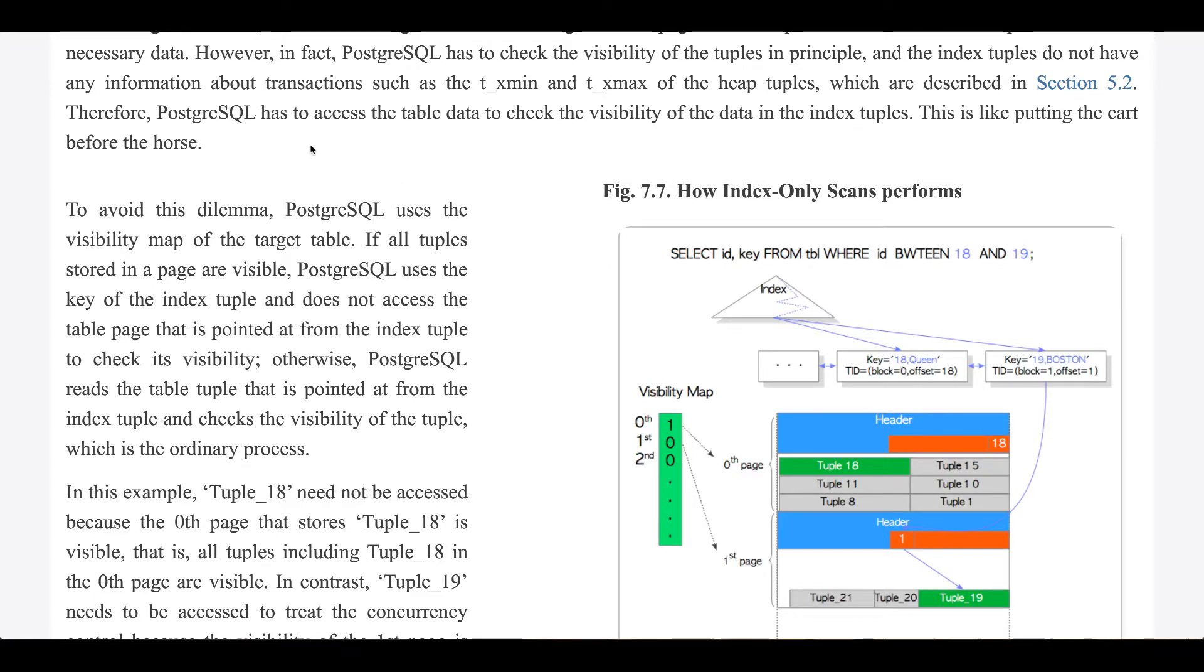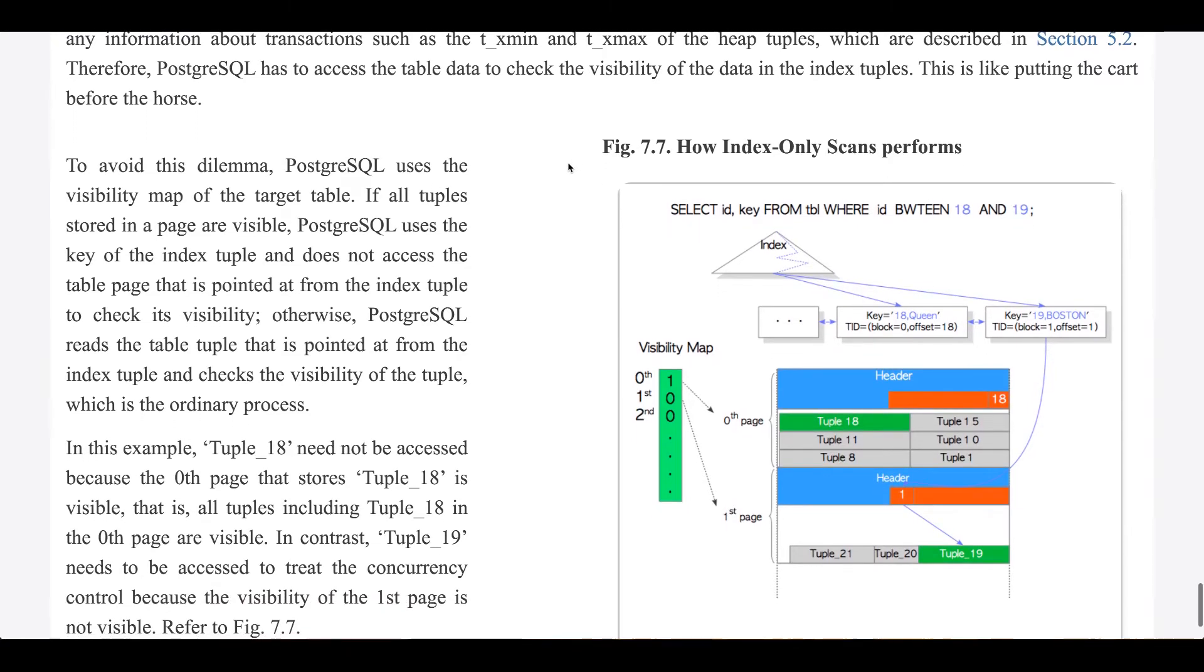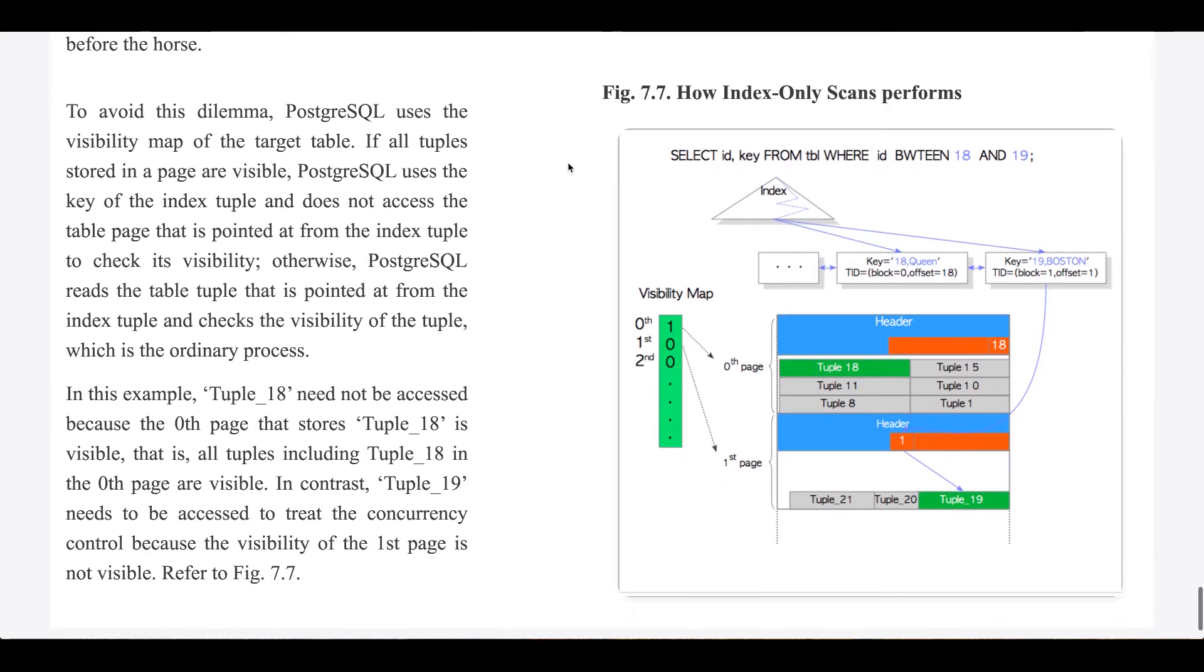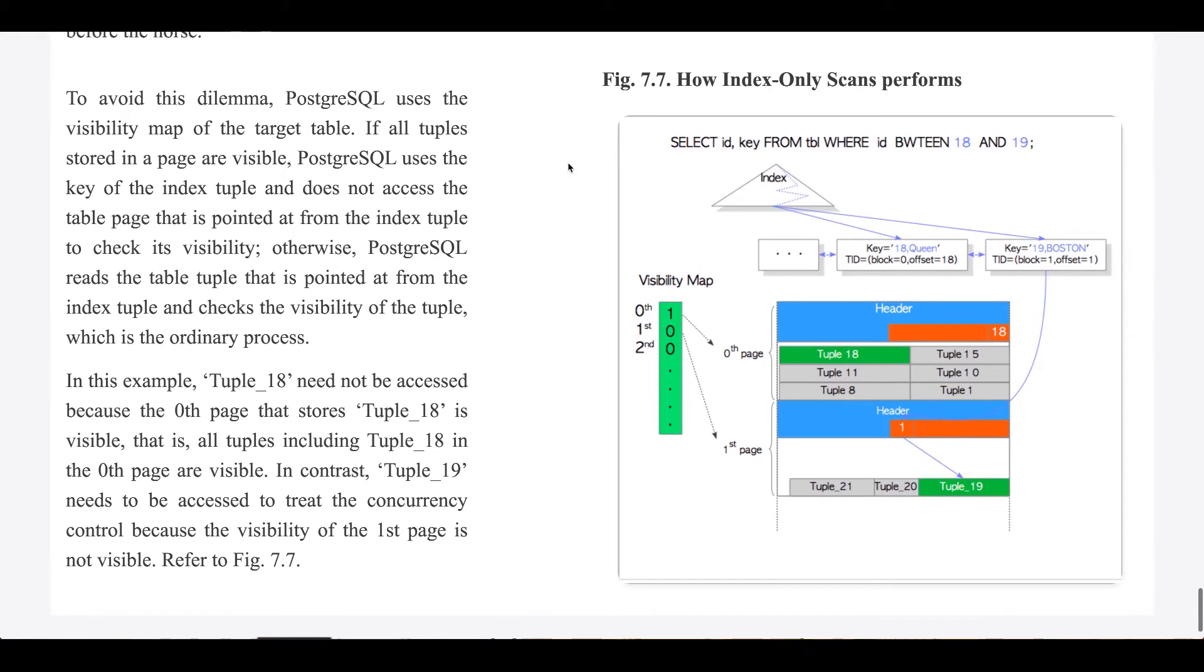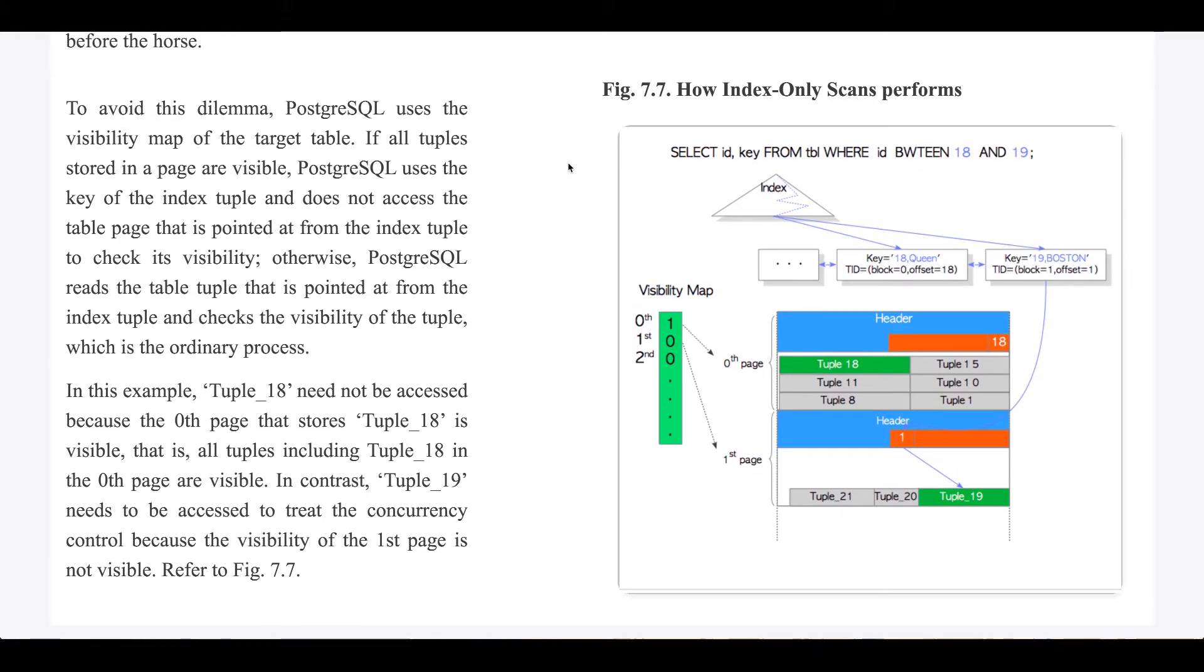Therefore, Postgres has to access the table data to check the visibility of the data in the index tuples. This is like putting the cart before the horse. To avoid this dilemma, Postgres uses the visibility map of the target table.